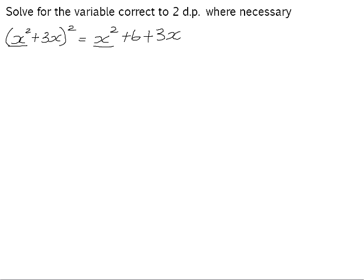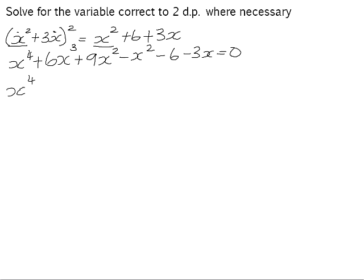So x squared plus 3x, all squared, is x to the power of 4. x squared times 3x is 3x cubed. We'll have two of those, which gives us 6x cubed plus 9x squared. And then if we subtract the x squared, the 6, and the 3x from both sides to equate to 0, tidying up: 9x squared minus x squared is 8x squared, minus 3x minus 6, is equal to 0.